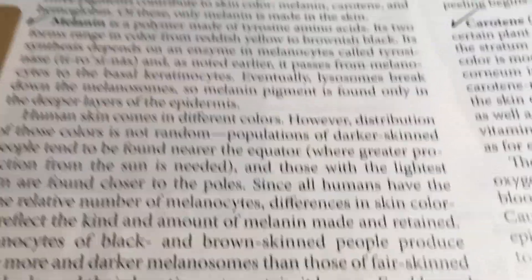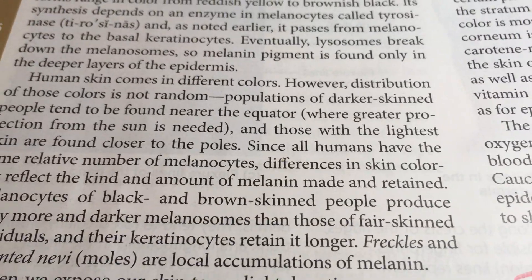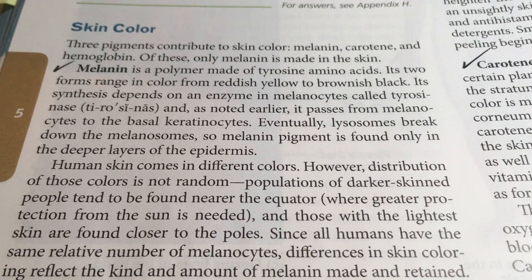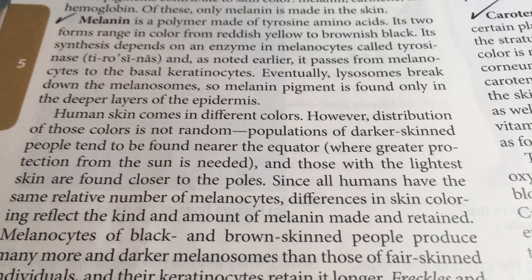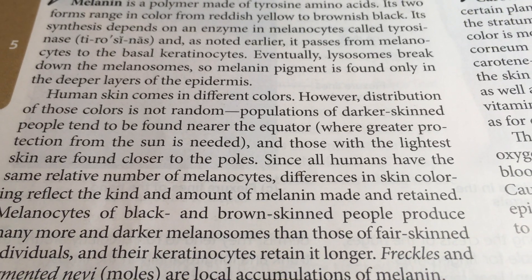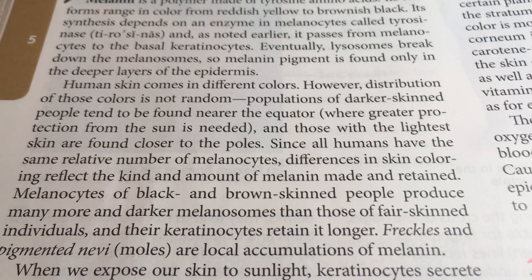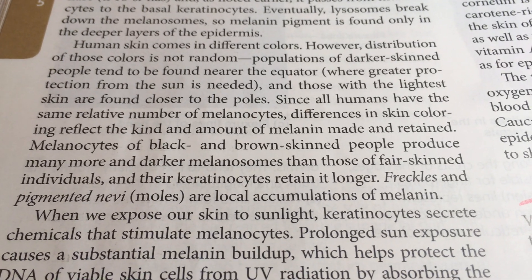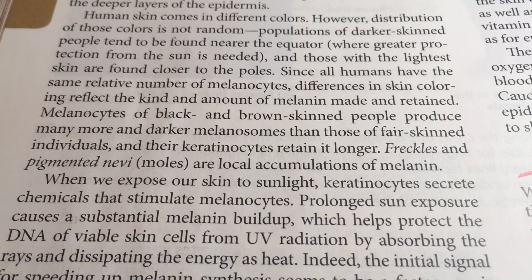Melanocytes produce melanin for eye color, skin color, and hair color. Skin color and hair color do not have to go hand in hand — some people have light-colored skin but very dark hair. There are variations on a theme, and whatever the genetics presupposes determines what happens.